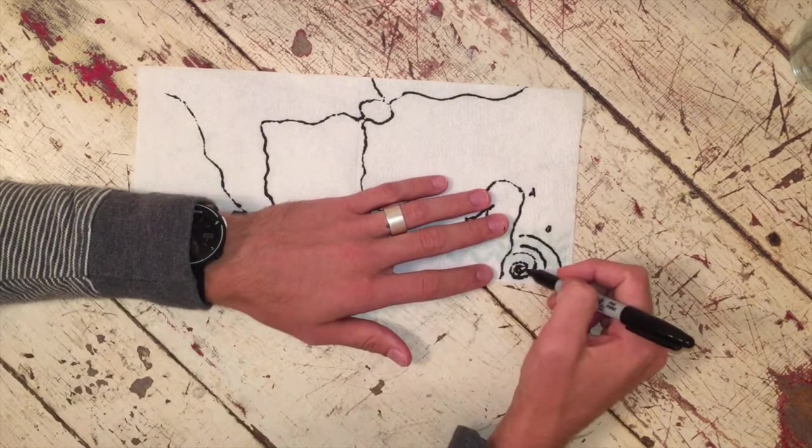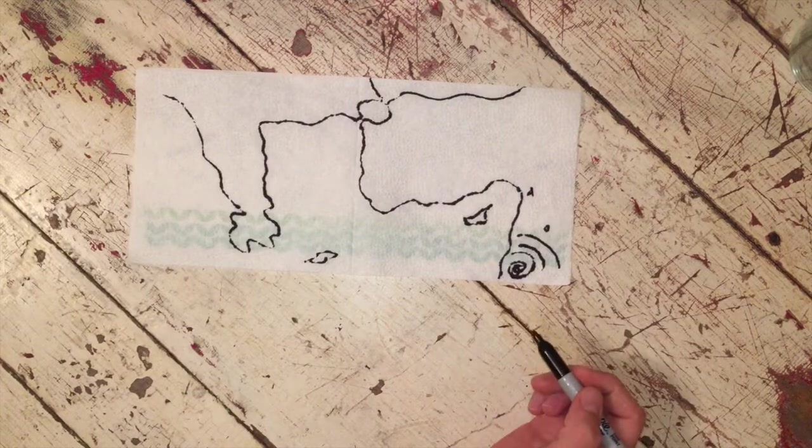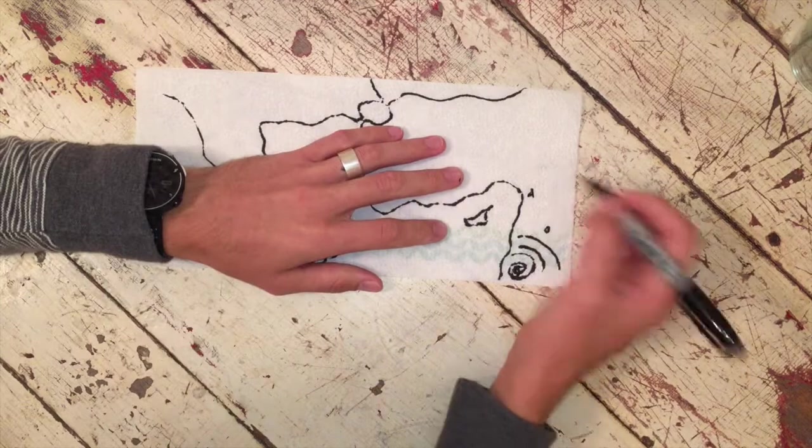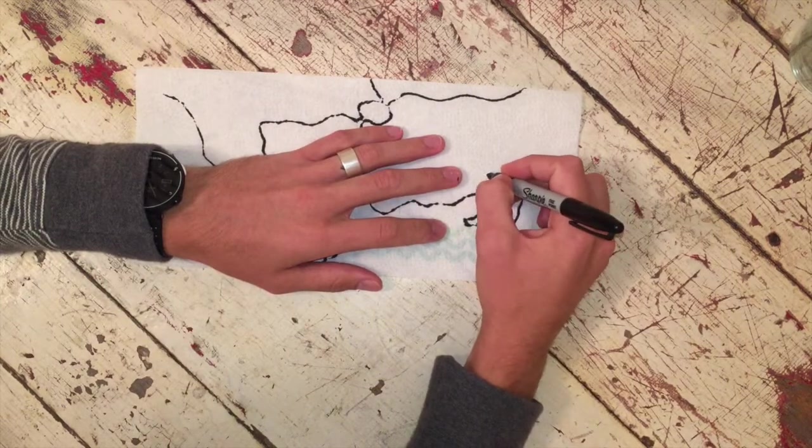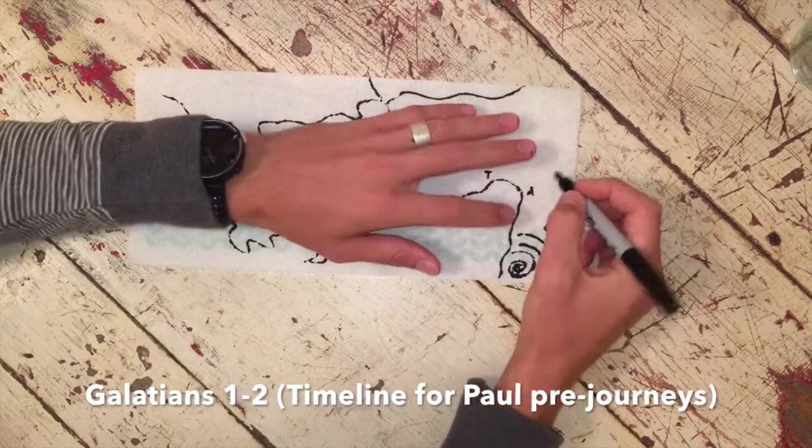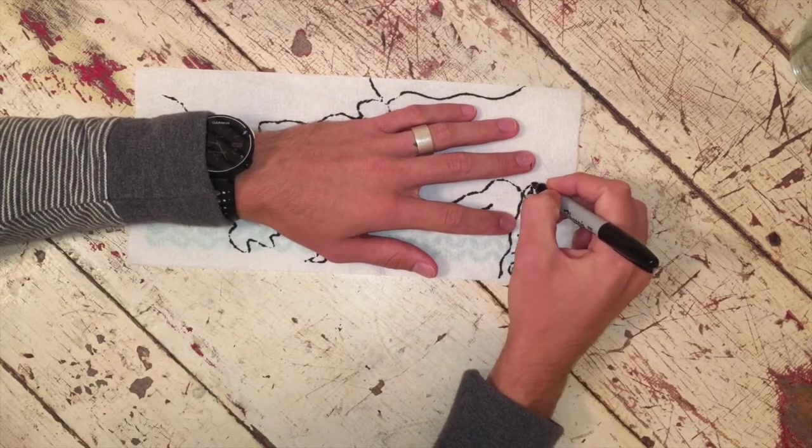And so the church of Jerusalem sends Barnabas up to Antioch to check out what's going on. And sure enough, they start a church. So Saul, who is now Paul, who's over in Tarsus for 14 years, Barnabas goes and gets him and they begin to coach this church to health.